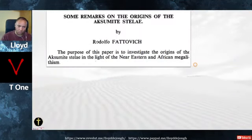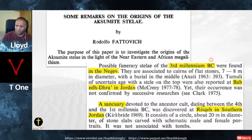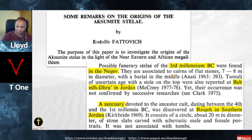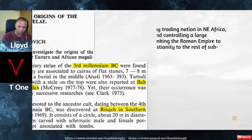Briefly, these stelae — little standing stones — these megaliths were all over the Near East: Arabia, the Negev in Israel, Jordan. They are associated with cairns of flat stones seven to eight meters in diameter, with a burial in the middle. At Bab ad-Dahr in Jordan they were a sanctuary devoted to the ancestor cult from the 4th and 1st millennia BC. This kind of thing was all over Arabia, from Jordan all the way into Africa.